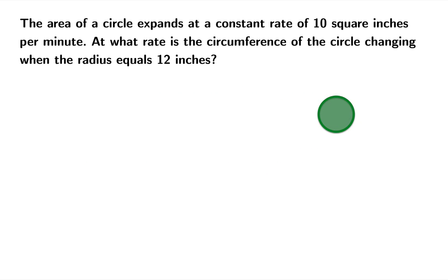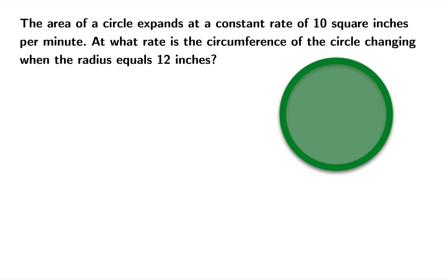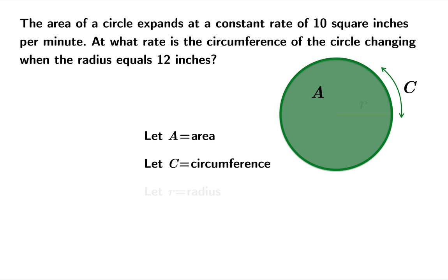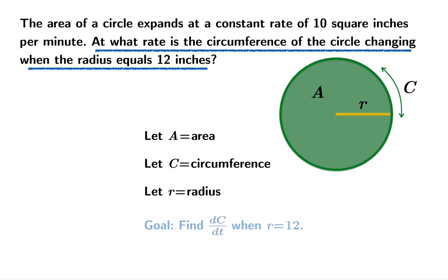Let's suppose the area of a circle expands at a constant rate of 10 square inches per minute. At what rate is the circumference of the circle changing when the radius equals 12 inches? So let's give some names to quantities. Let a be the area, let c be the circumference, and let r be the radius. We're supposed to be finding the rate at which circumference changes with respect to time when the radius is 12. In other words, we'd like to find dc/dt when r equals 12.